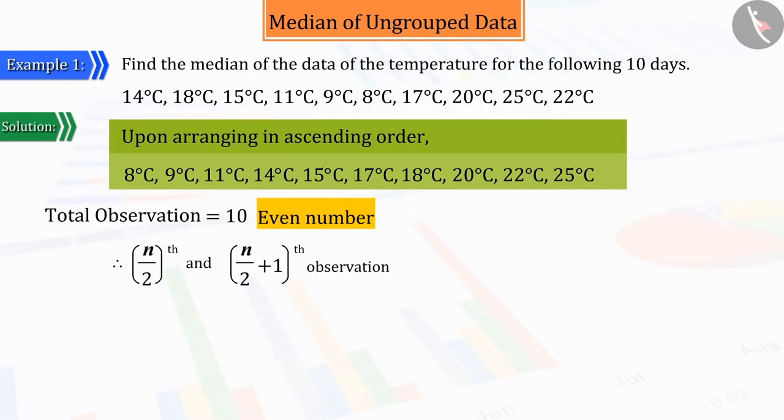We have learned that if the number of observations is even, then to get the median, we have to find the mean of the n/2 th observation and n/2 + 1 th observation.